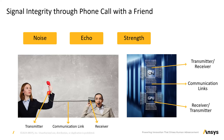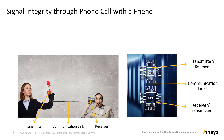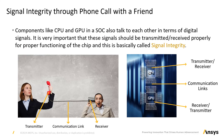Occasionally you might hear faint snippets of other conversations while on a call. This is due to interference from adjacent signals in the channel. A similar phenomenon in electronic signals is called crosstalk. Components like CPU and GPU in a SoC also communicate with each other in terms of digital signals. It is very important that these signals are transmitted and received properly for proper functioning of the chip — this is basically what is known as signal integrity.